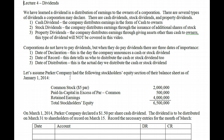With a cash dividend, the company distributes earnings in the form of cash to its actual owners. With a stock dividend, the company distributes earnings through the issuance of additional shares of stock. With a property dividend, the company distributes earnings through giving assets other than cash to owners — this type will not be covered in this video. We're looking solely at cash and stock dividends.